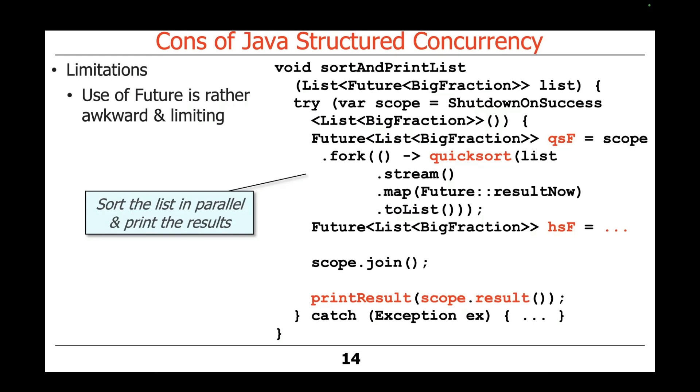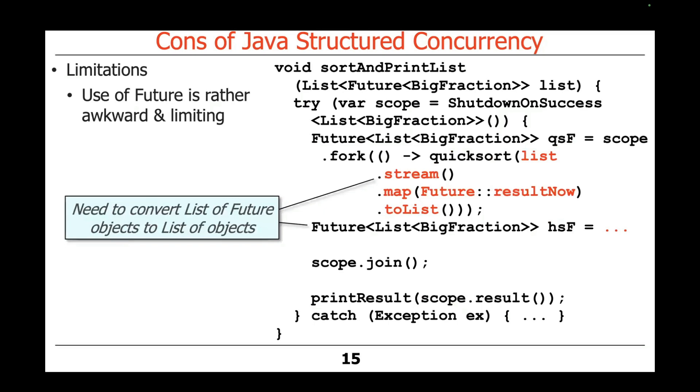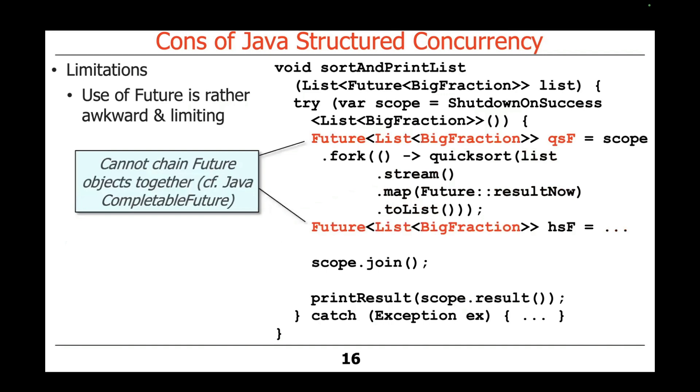Here's an example where you're going to go ahead and sort a list in parallel and then print the results, and it just gets somewhat complicated and convoluted to do this type of code. It's just ugly. You have to convert a list of future objects to a list of objects, which is ugly and a little time-consuming. And the other problem is you can't chain together futures. This is one of the well-acknowledged limitations with the Java Future interface, which was designed a long time ago, pretty much 20 years ago. And they've added newer features to Java, like completable futures, to make this cleaner.